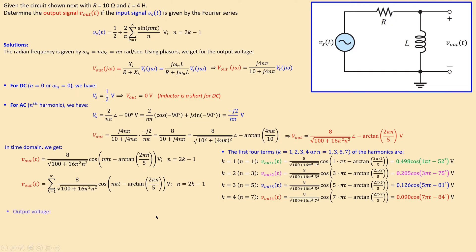Collecting all five terms — since the DC term is zero, we skip it — we have Vout₁ through Vout₄, continuing to Vout∞. Looking at the amplitudes: approximately 0.5, then 0.21, then 0.13, then 0.09 — decreasing rapidly. You can also see that as frequency increases, the phase approaches −90°, which is also visible from this analysis.